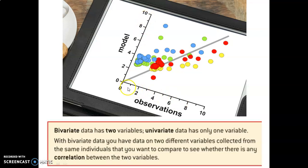So we have bivariate data. It's data that appears on two axes. We have an independent axis and a dependent axis, and we can plot a scatterplot. And when we have a scatterplot, we can look for correlation.